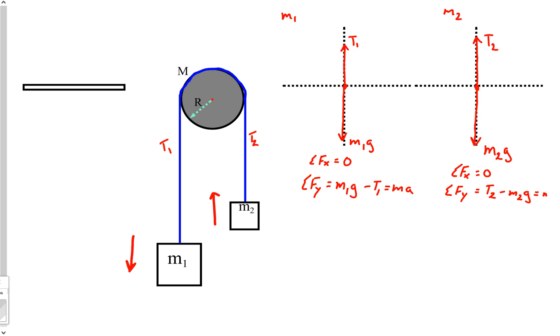And then on the other one, sum of the forces y, it's going up so T2 minus m2g equals m2a. And I've already caught a mistake. It's very important when working these problems that you remember all your m1s and m2s. I forgot an m1 which I will now correct, so m1a.